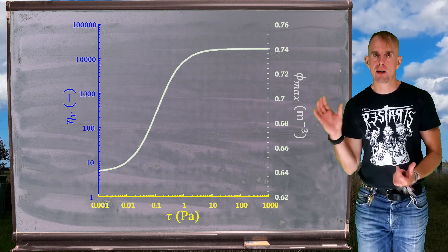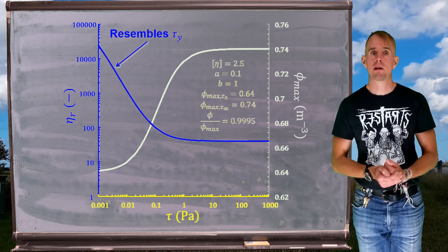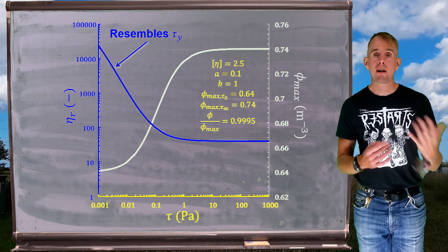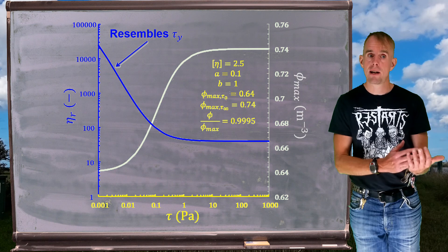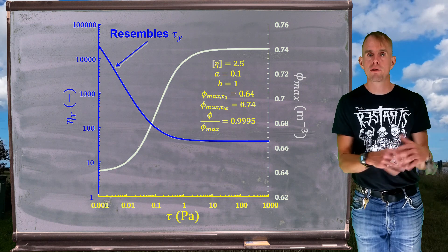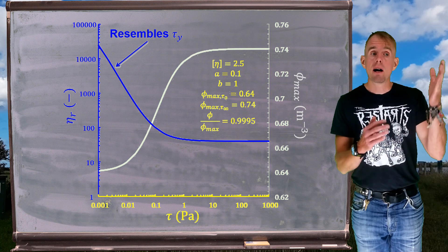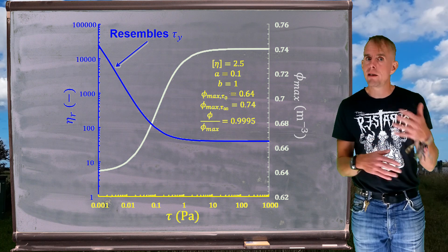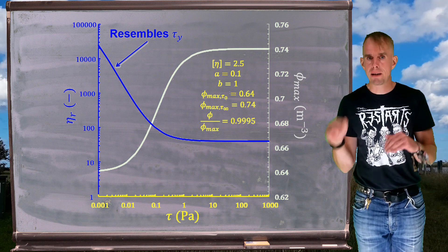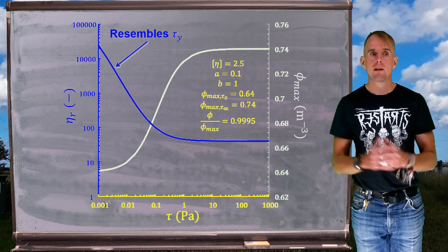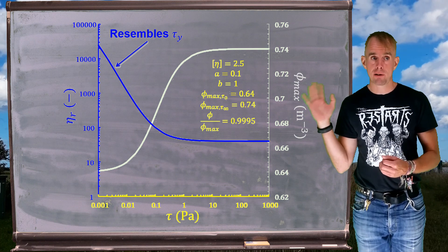When we combine the φ_max prediction with Krieger-Dougherty, perhaps unsurprisingly, what we see is a variation in viscosity that allows the description of a high viscosity at low stress because the maximum packing fraction is low at low stress, a shear thinning type behavior or maybe a yielding type behavior that then transitions out to a high stress viscosity plateau. So the parameters used in Krieger-Dougherty and Wildermuth and Williams are there on the graph.